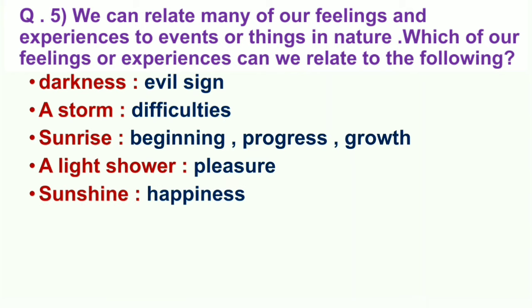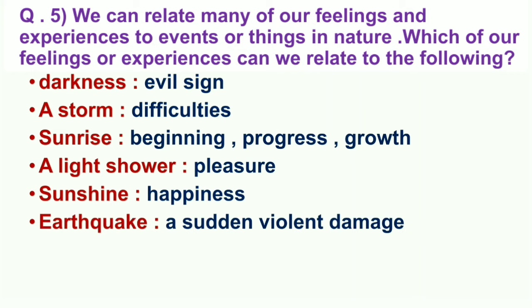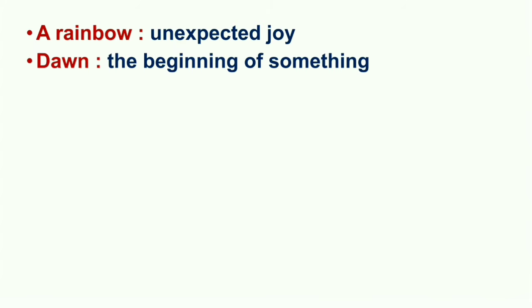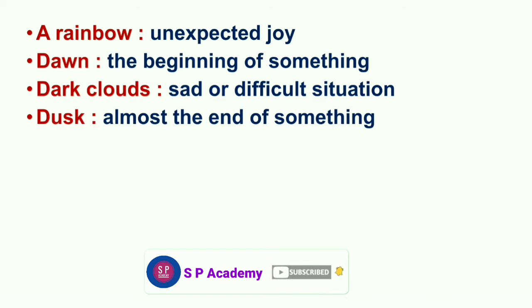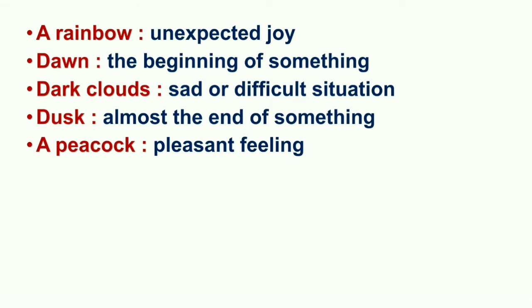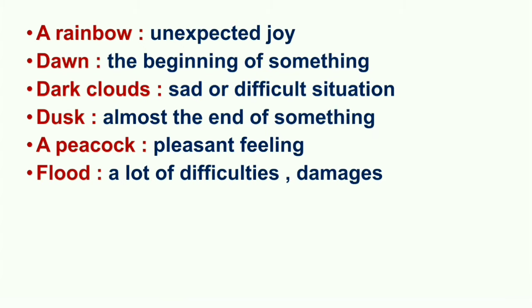Sunshine means happiness. Earthquake means sudden violent damage. Rainbow means unexpected joy. Dawn means the beginning of something. Dark clouds mean tense or difficult situation. Dusk means almost the end of something. Peacock means pleasant feeling. Flood means a lot of difficulties or damages.